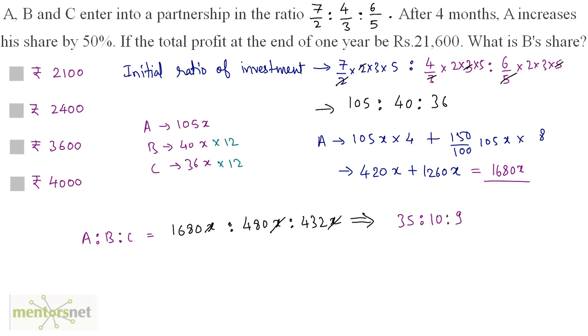The total parts are 35 plus 10 plus 9 which equals 54 parts. We want B's share. B's share is 10 out of 54 of 21,600. B's share is equal to 10 by 54 times 21,600 and that will be equal to 4000. Answer is option D.